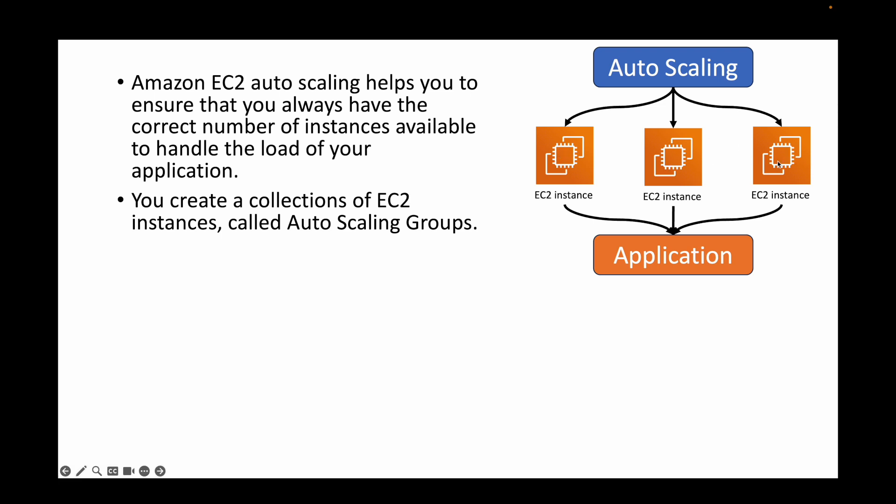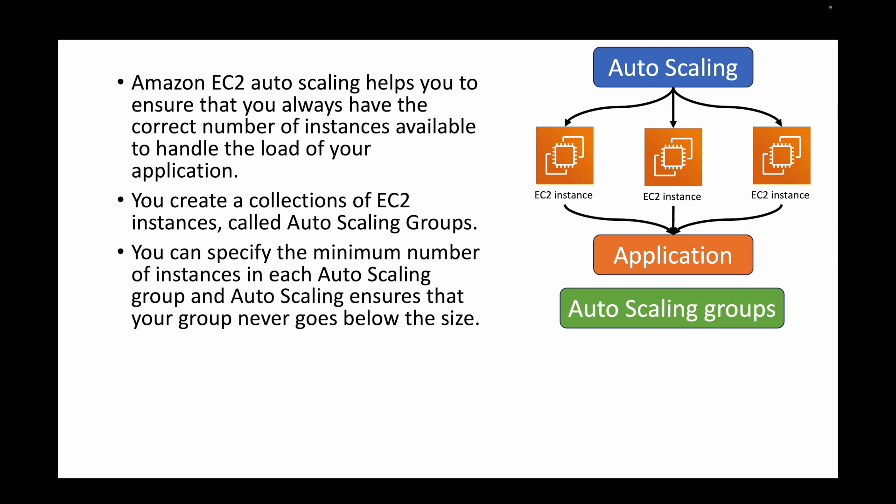We create a group of EC2 instances — a collection — and this collection we call the auto scaling group. When creating your auto scaling group, one option is to specify a fixed capacity: no matter what the load is, you want five EC2 instances. The auto scaling group will ensure it always maintains five EC2 instances, and if one goes down it will automatically spin up a new one.